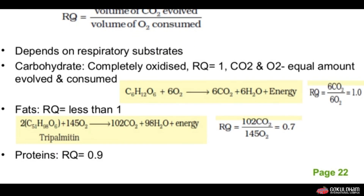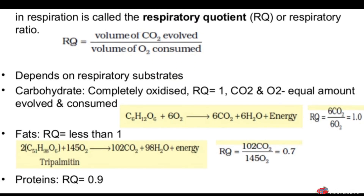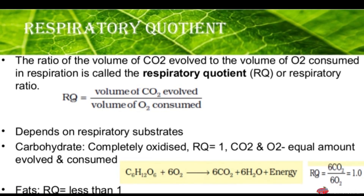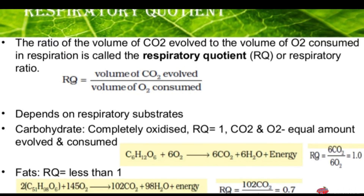The respiratory quotient for proteins is 0.9. The importance of this ratio is that we can identify which kind of substrate is being respired during respiration, and calculate which macromolecules are being respired in the body.